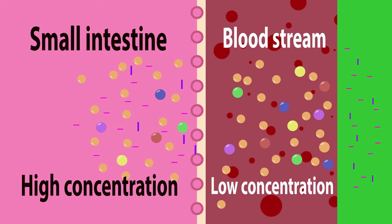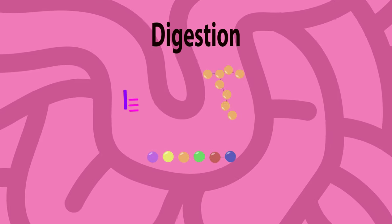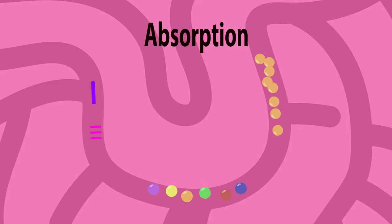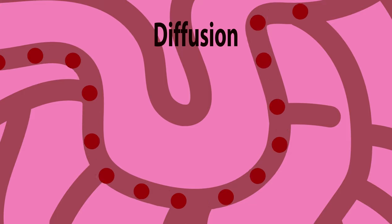So after digestion breaks down large molecules into small molecules, absorption of the small molecules happens inside our small intestine by diffusion into the blood vessels. What an amazing system!